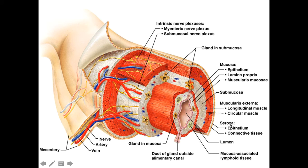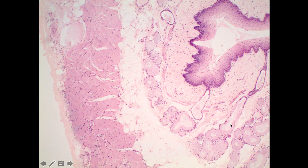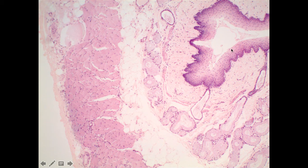Starting with the esophagus — the esophagus tends to be one of the easier ones to identify because it is the only one that has a stratified squamous epithelium. Here we can see the lumen, then the wall of the esophagus moving all the way out to the outer surface. Once you find the lumen, look for the epithelial lining — in this case it's clearly stratified squamous, not the simple columnar that represents all other regions. If you see stratified squamous, you know you're in the esophagus.